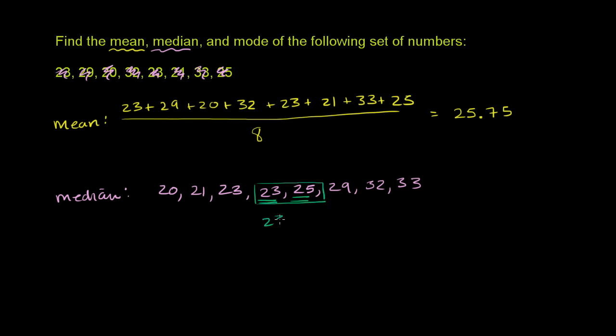So if you take 23 plus 25 divided by 2, that's 48 over 2, which is equal to 24. So even though 24 isn't one of these numbers, the median is 24. So this is the middle number.